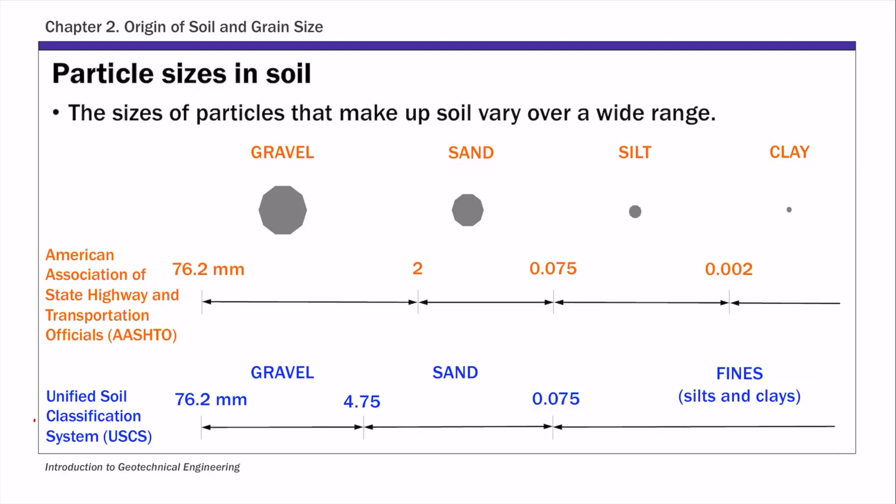So recall in the AASHTO system, soils are classified into gravel, sand, silt and clay based on these four threshold values. So these are particle sizes 76.2, 2 mm, 0.075 and 0.002 mm.